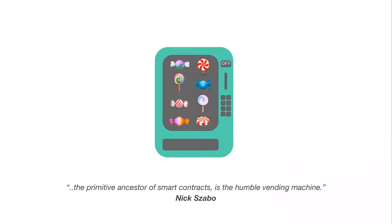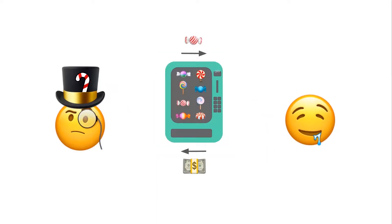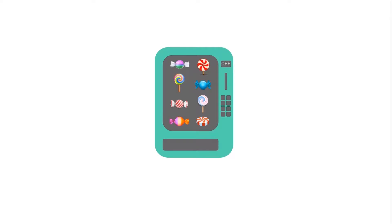Nick Szabo uses the vending machine as an example of a primitive ancestor of smart contracts. Instead of going to a shop to buy candy from a clerk, you can make automatic transactions with the vendor through a machine, without an intermediary. If you insert a coin, you can choose a product by clicking a button and the machine dispenses it.